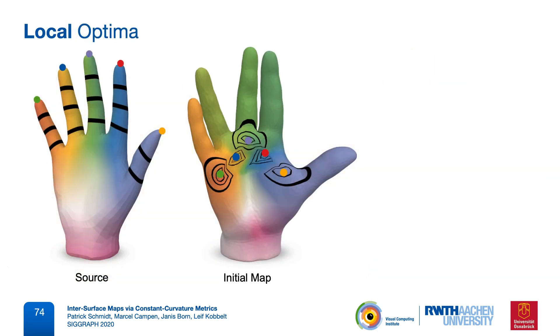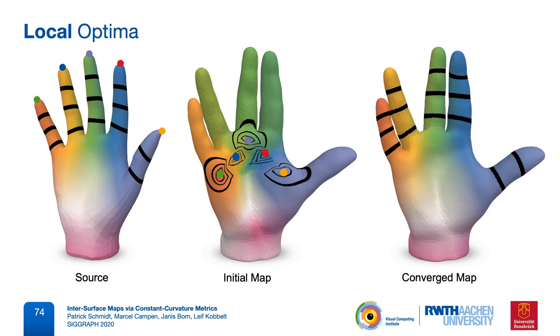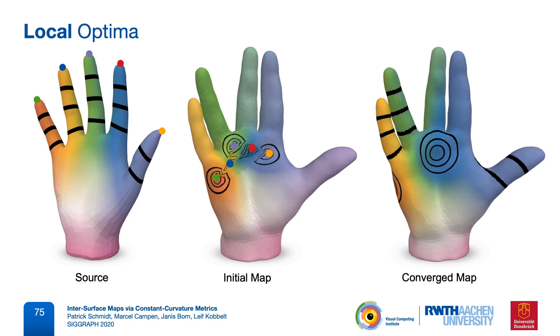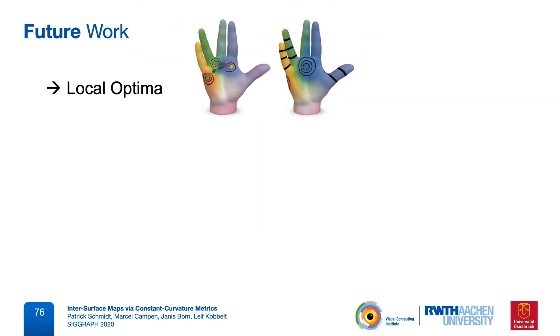Here we start with an initialization far away from the desired map. While our algorithm usually reaches the desired solution, it is of course not immune to converging to a bad local optimum, as in this example where the fingers end up mismatched. So finding good optima automatically is an interesting direction for future work.